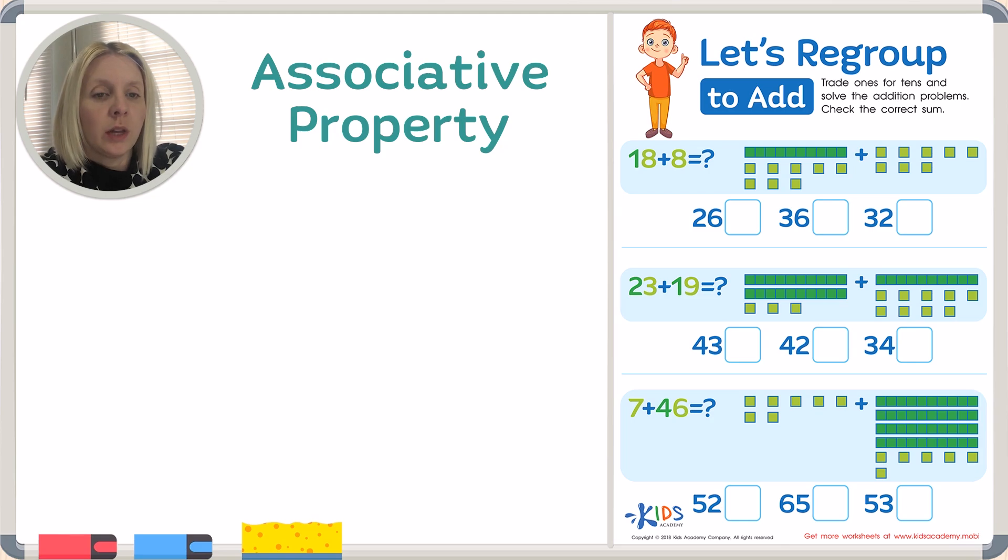Basically what that means is that three numbers will always go together. For example, 3 plus 2 equals 5. The three numbers we're talking about here are 3, 2, and 5. They always go together in an associative property. We can mix up these numbers in about four different ways and they will always go together.